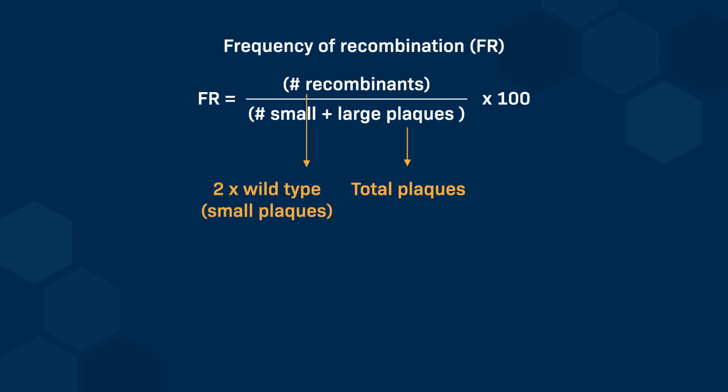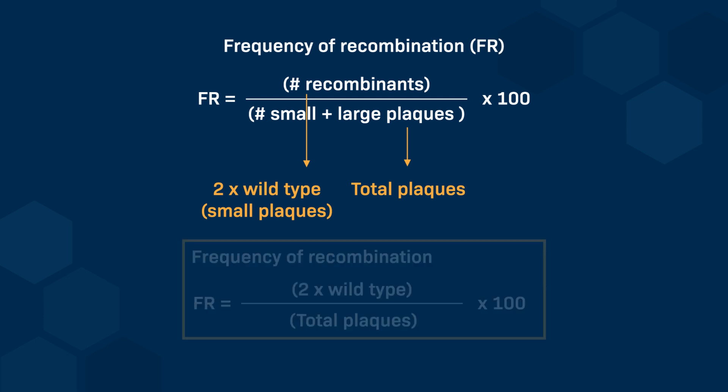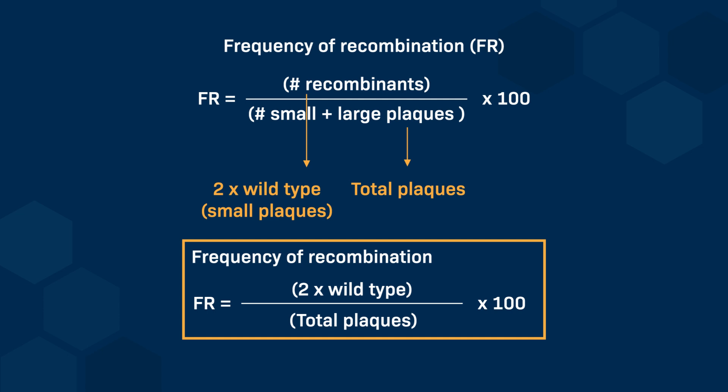But we know that each time a double mutant is formed, a wild-type must also be formed, because it's a single recombination event that gives us one wild-type and one double mutant. So, in fact, we do know the total number of recombinants — it's the number of wild-types times 2. Therefore, the frequency of recombination is 2 times the number of small plaques divided by the total number of plaques, times 100. When recombination is a rare event, there are only a few small plaques among many large ones, which makes counting them very tricky.